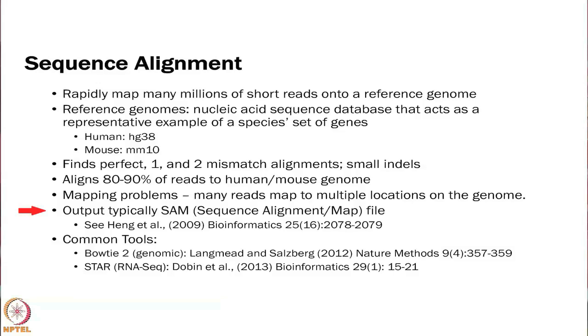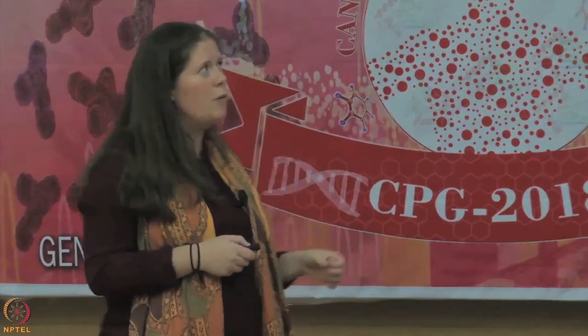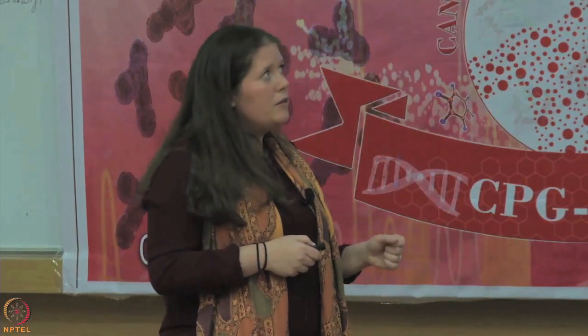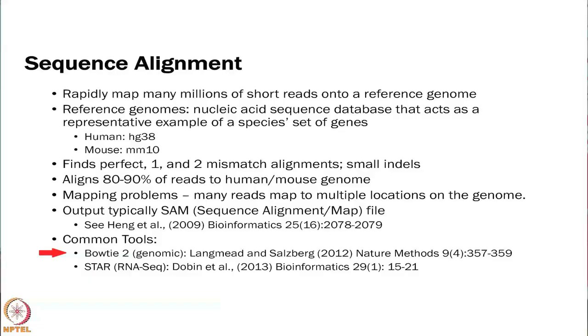Typically the output is what is called a SAM file, which is a sequence alignment map file. I am not going to go into the details about this — we could have a whole day on SAM files — but I did include a reference that is pretty thorough on the SAM file format. There are some common tools: Bowtie, which is typically used for genomic alignment, and STAR, which is used for RNA-seq. I also included references if you are interested in learning more about either of those.